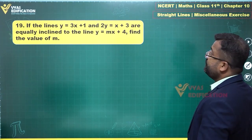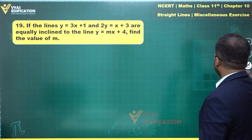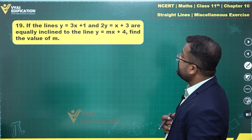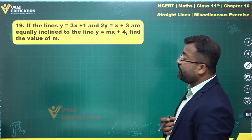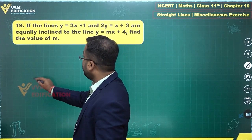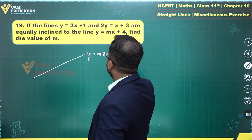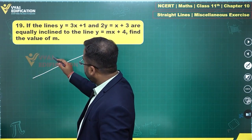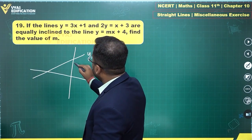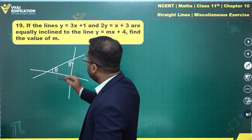Question 19 says: if the lines y = 3x + 1 and 2y = x + 3 are equally inclined to the line y = mx + 4, find the value of m. What do you mean by equally inclined? This is the line y = mx + 4, and we are looking at two particular lines which are equally inclined — meaning this angle is theta and this angle is also theta.